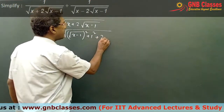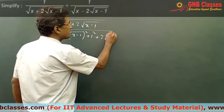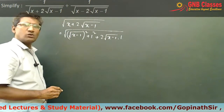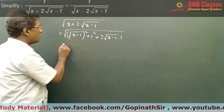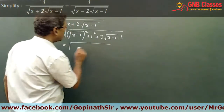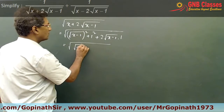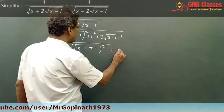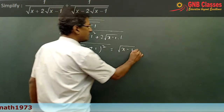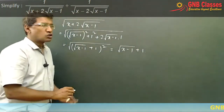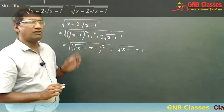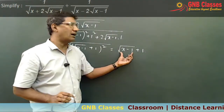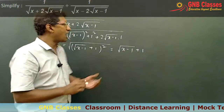Why have I done this? Because this will give us the formula for a squared plus b squared plus 2ab, which is nothing but a plus b whole square. So that gives you under root x minus 1 plus 1. So the first expression of the given problem has in the denominator under root x minus 1 plus 1.